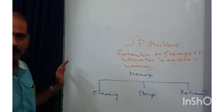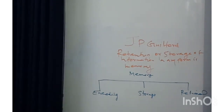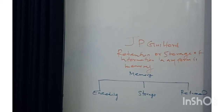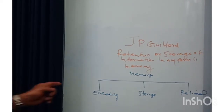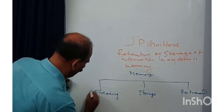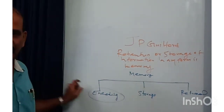Memory has three important phases: encoding, storage, and retrieval. The first stage, encoding, consists of placing information in our memory — placing information in our memory is known as encoding.